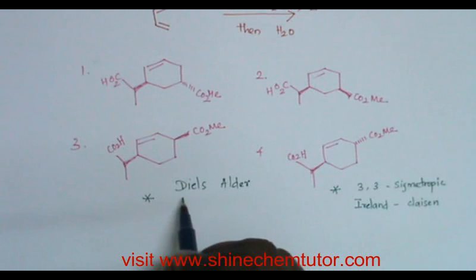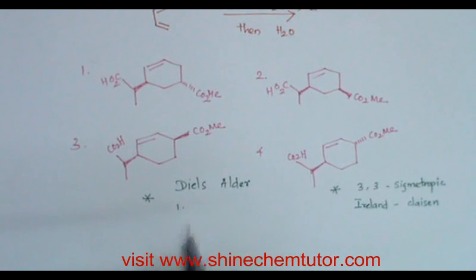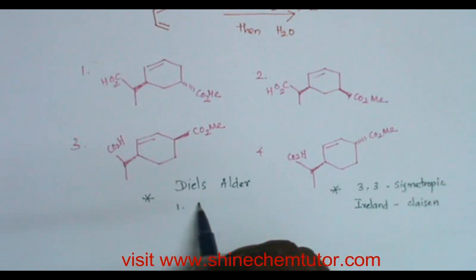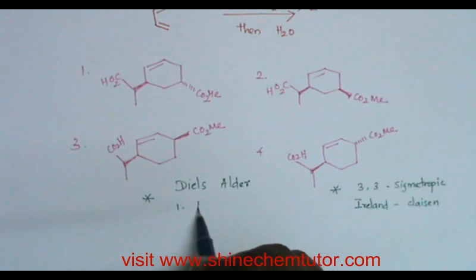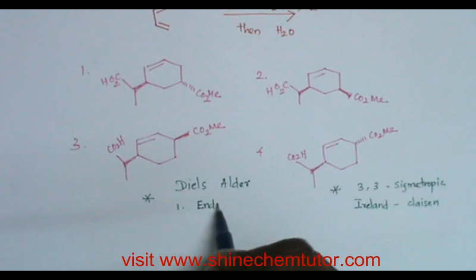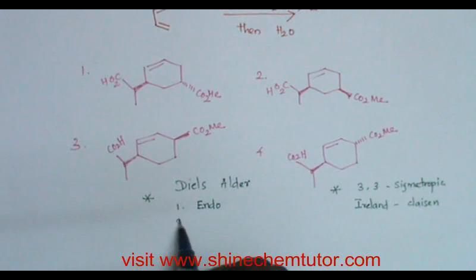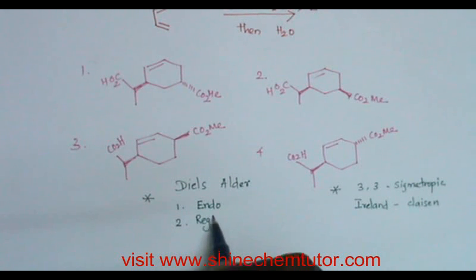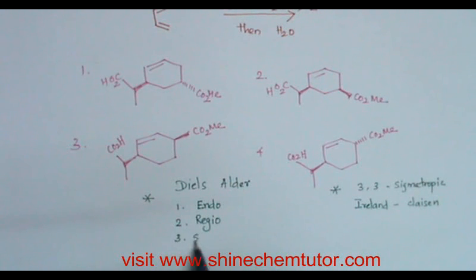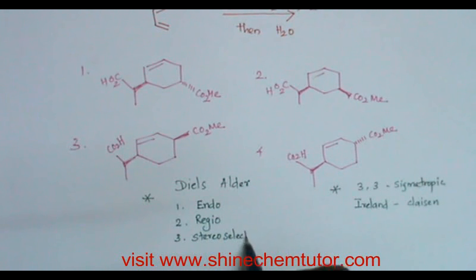As soon as you come across a Diels-Alder reaction, you have to think of the selectivity involved. The first is endo selectivity, the second is regioselectivity, and the third is stereoselectivity. All three types of selectivity are going to be discussed in this problem.